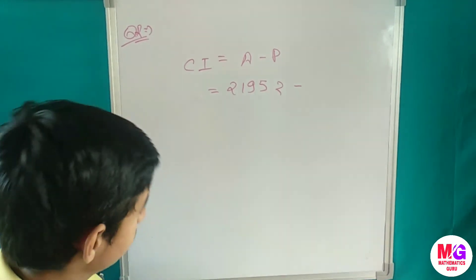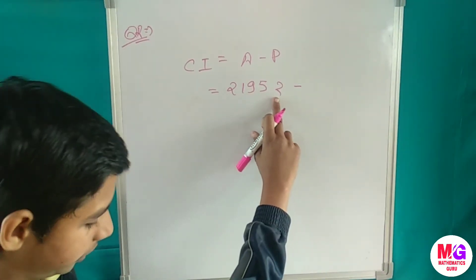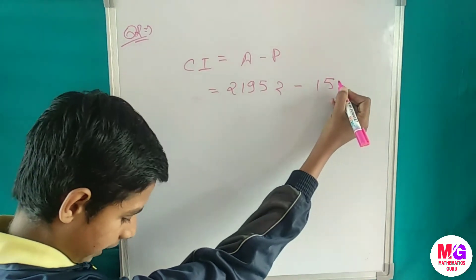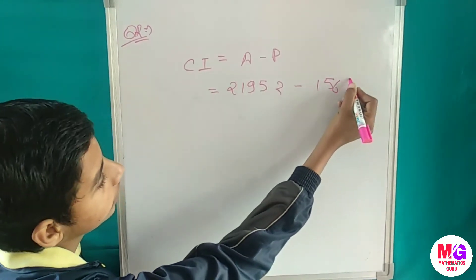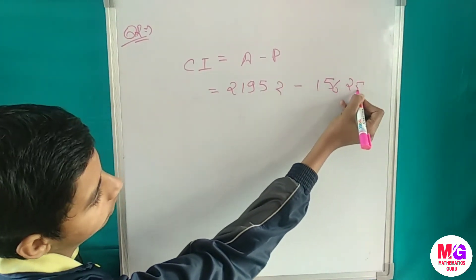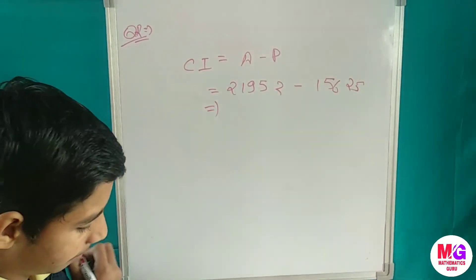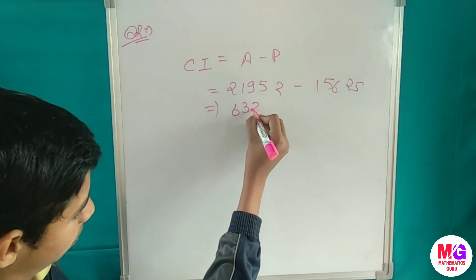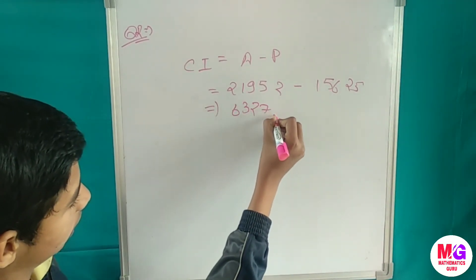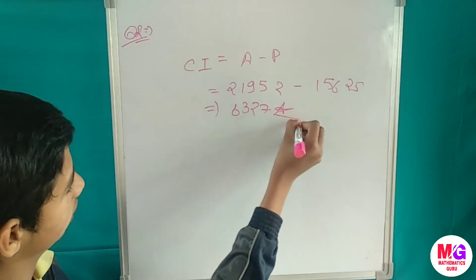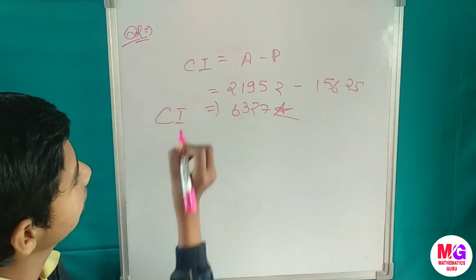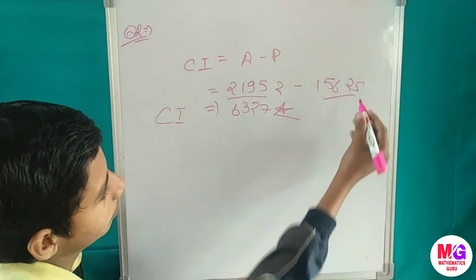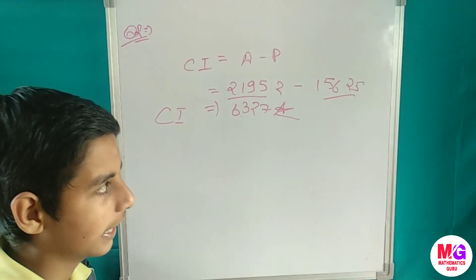Our amount is 21952 and our principal was 15625. After subtracting them we get 6327 rupees as our compound interest. So 6327 is our CI, 21952 is our amount, and 15625 is our principal.